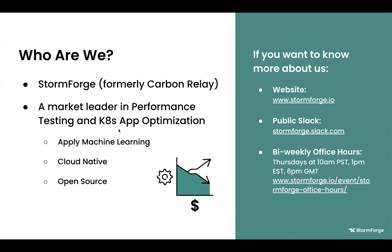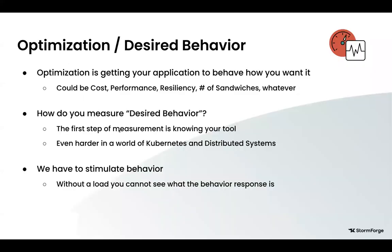As a group focused on testing and optimization, we want to first establish what optimization is and how it led us to this particular question we wanted to solve. Optimization, at least as I'm defining it, is getting your application to behave how you want it — however you want your application to act once you've finished the act of optimization. Whether you're trying to normalize for cost, increase your performance, get better resiliency, whatever property it is that you're trying to get into your application, that is part of optimization. It is your desired behavior.